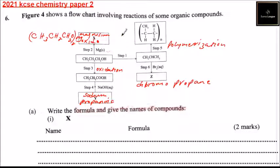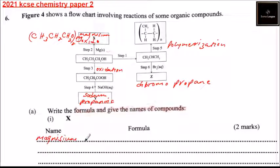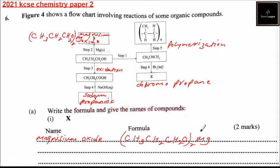Looking at Part A: write the formula and give the name of compound X. So X is a magnesium compound, which we have said. The formula is CH3, CH2, CH2, O, 2, Mg. That is the formula for the magnesium compound X.